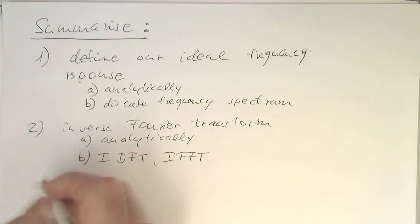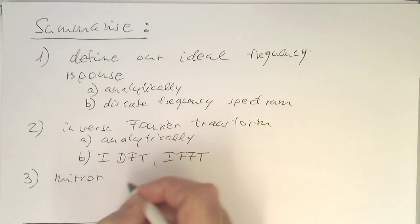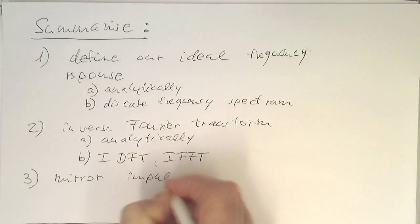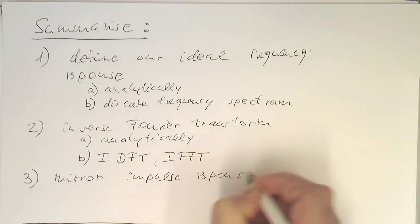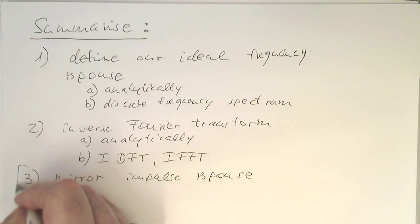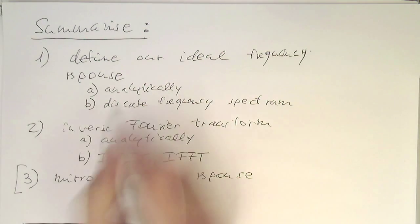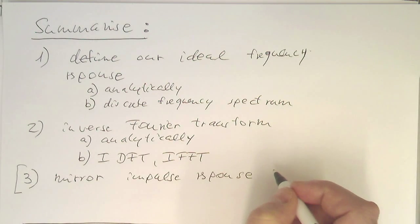So, once we've got that, then 3, we might need to mirror the impulse response. Usually, this is not required, because we are creating symmetry already through our Fourier transform condition to get real values.